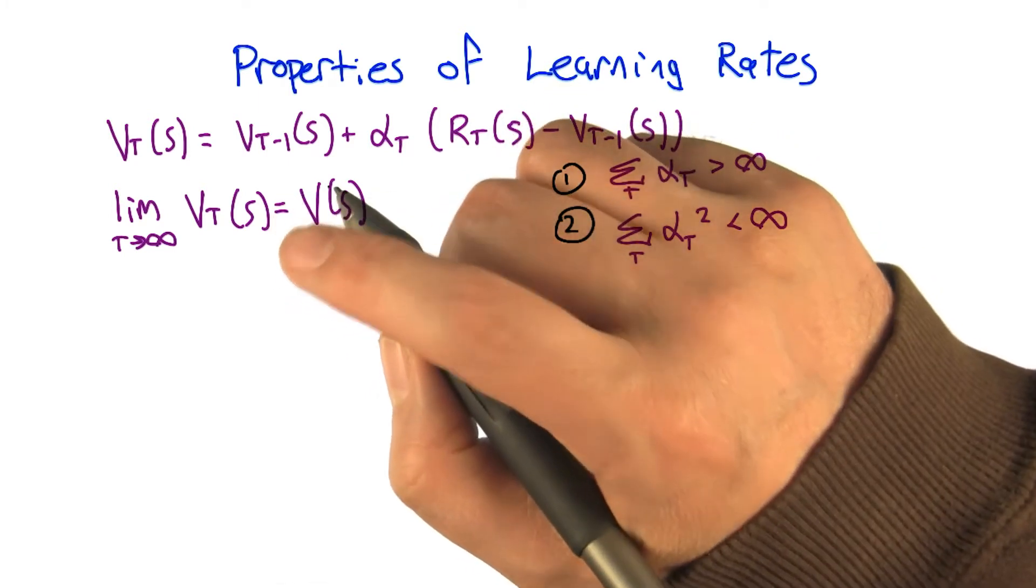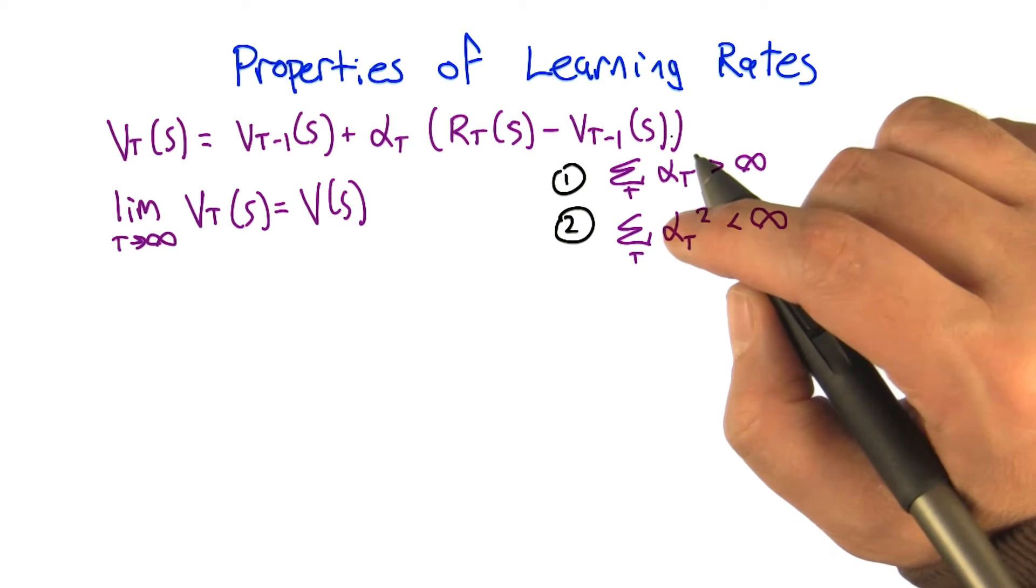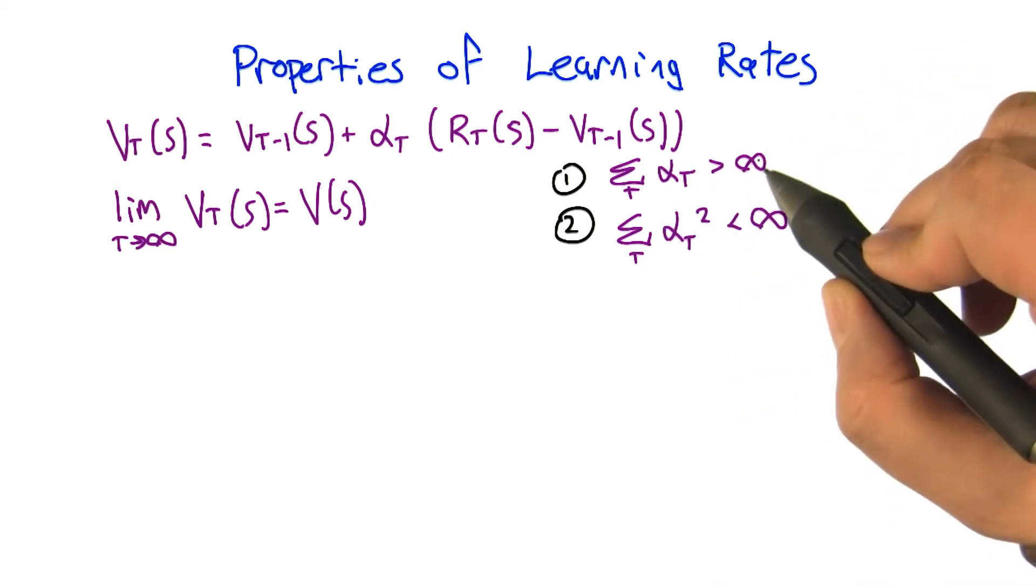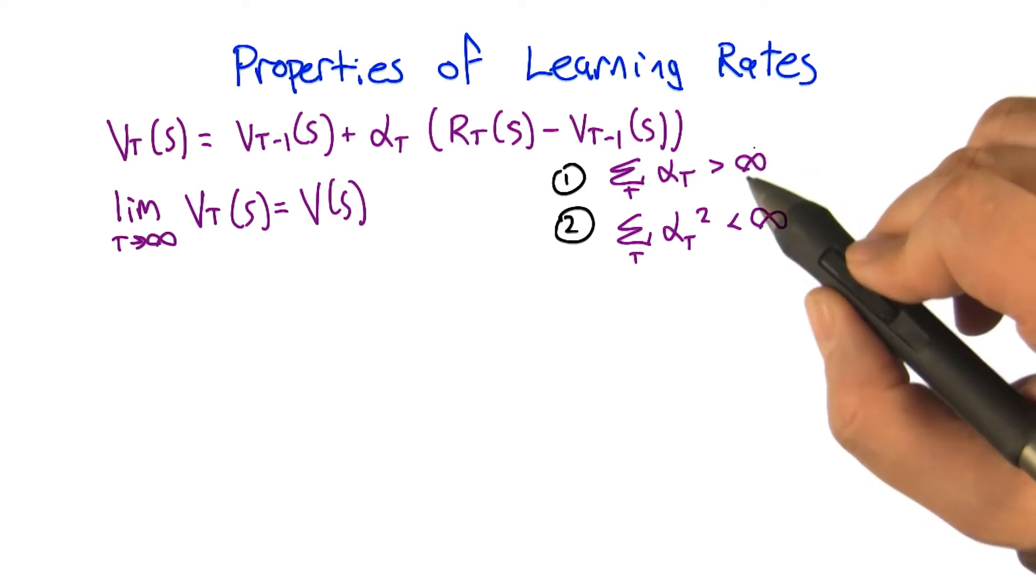But there are conditions that we have to put on the learning rate sequence. And the learning rate sequence has to have the property that if you sum up all the learning rates, it actually sums up to infinity. It's unbounded, it diverges.